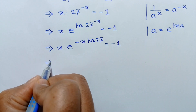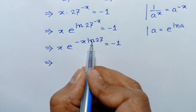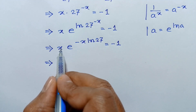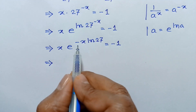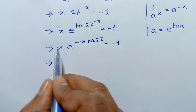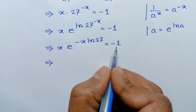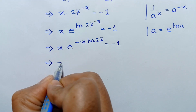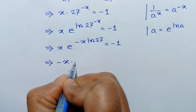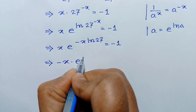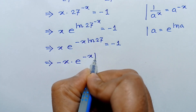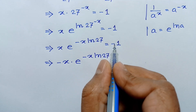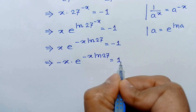To make the exponent negative x ln of 27, we multiply both sides by negative 1. So multiplying both sides by negative 1, we get negative x times e to the power negative x ln of 27 is equal to positive 1.